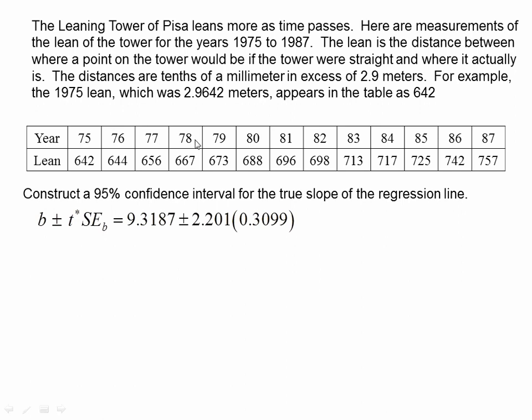So we have 1, 2, 3, 4, 5, 6, 7, 8, 9, 10, 11, 12, 13. N would be, our degrees of freedom would be 11. So this is the reason why we have our T-star value of 2.201.